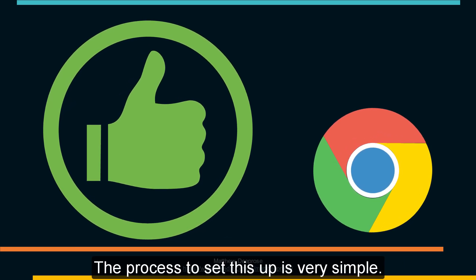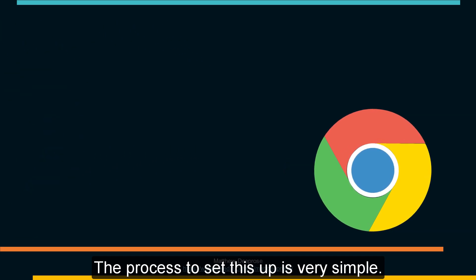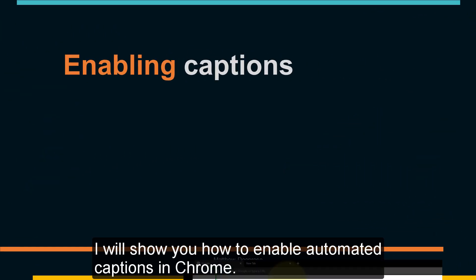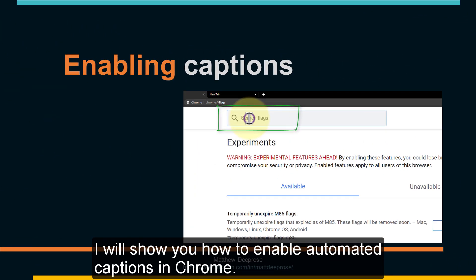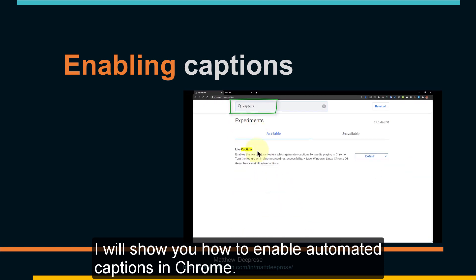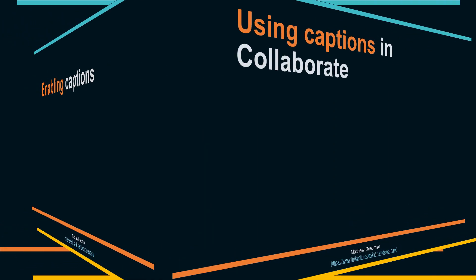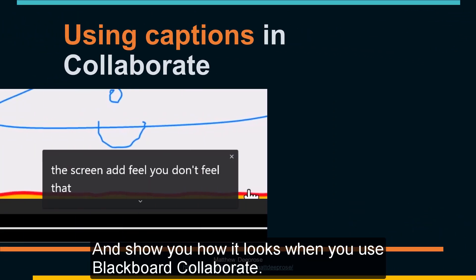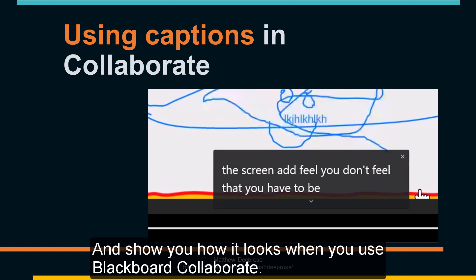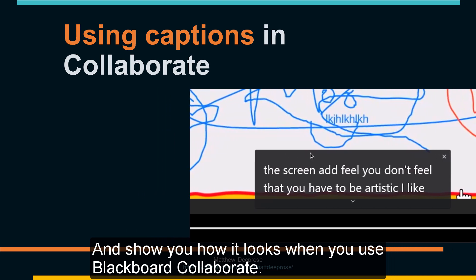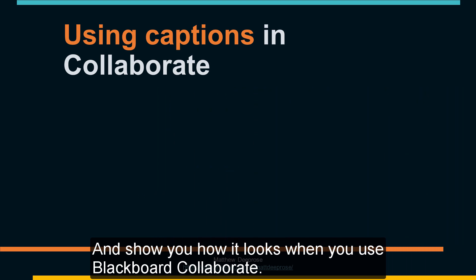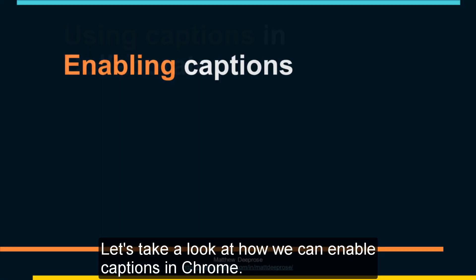The process to set this up is very simple. I will show you how to enable automated captions in Chrome and show you how it looks when you use Blackboard Collaborate. Let's take a look at how we can enable captions in Chrome.